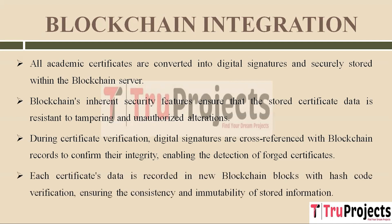By utilizing the SHA-256 algorithm — Secure Hash Algorithm 256-bit — we have maintained data integrity. Each academic certificate's data is recorded in new blocks within the blockchain, and these blocks are linked to the previous ones through a unique code called a hash. This hash code is generated based on the content of the block, including the certificate data. When new data is added, the system verifies the hash code of the new block against the previous one. If they match, it confirms the data hasn't been tampered with, ensuring consistency and immutability of the stored certificate information.